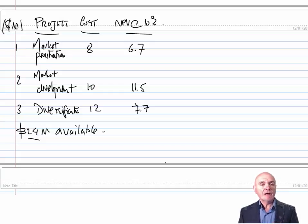Here we have an example. We have three potential projects - effectively three different quadrants of the ANSOFF matrix: market penetration, such as increasing your market share from 20 to 25%; market development, maybe opening up markets abroad; and then diversification. We have 24 million available. The cost of each project is noted together with their net present values.